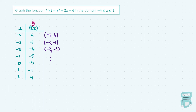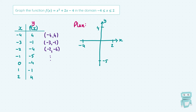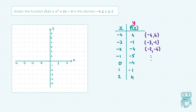Now we want to draw this on an x and y axis. First I'll plan what it will look like: the x-axis needs to go from minus 4 up to 2, and the y-axis needs to cover from minus 5 up to 4. I'll use my ruler to create axes with these values. Here you can see the axes are drawn with the x-axis from minus 4 to 2 and the y-axis with enough range to plot all the points from the table.